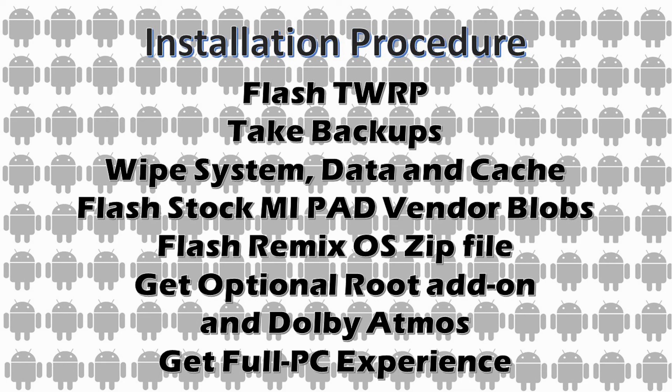The installation procedure is very simple, as it is with other custom ROMs for the Mi Pad. You have to flash the TWRP (Team Win Recovery Project). You must be on the stock vendor blobs — for some shield-based ROMs we use shield-based blobs, but for this ROM you need to be on stock Mi Pad vendor blobs. The links to all required files are in the description. Please make a full backup of your data before proceeding, because you have to wipe the system partition, data partition, and caches to install this ROM.